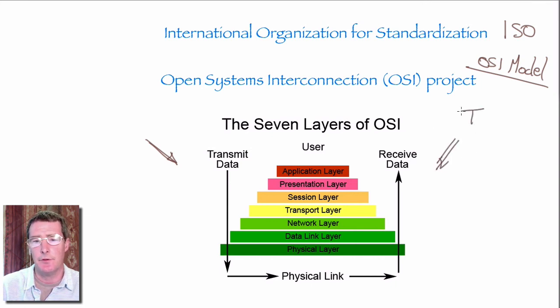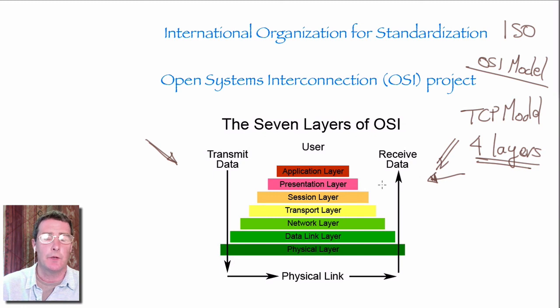Now in the internet, we use a modified model of this, and it's called the TCP model, and it has four layers. Those layers incorporate more than one layer of the OSI model. Some of those layers incorporate more than one layer of the OSI model, so all the functions are the same. Studying the OSI model makes all other network models easier to understand.